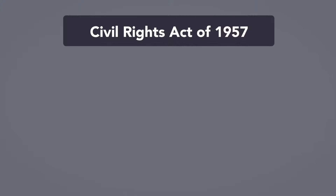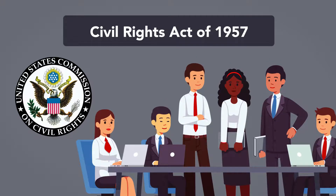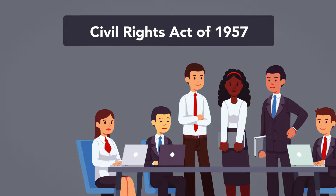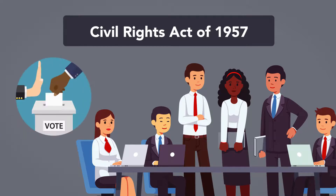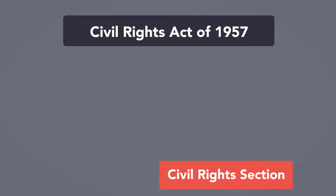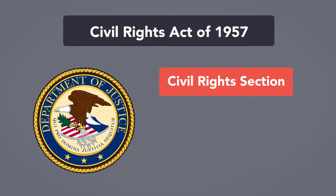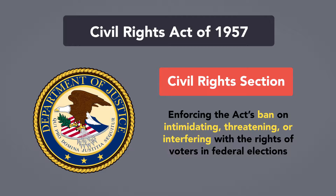The first impactful law was the Civil Rights Act of 1957, which created the United States Civil Rights Commission to study the problems of unlawful discrimination by states, particularly with respect to discriminatory interference with the right to register and vote. The act also created a new permanent unit — the Civil Rights Section within the U.S. Department of Justice — charged with enforcing the act's ban on intimidating, threatening, or interfering with the rights of voters in federal elections.